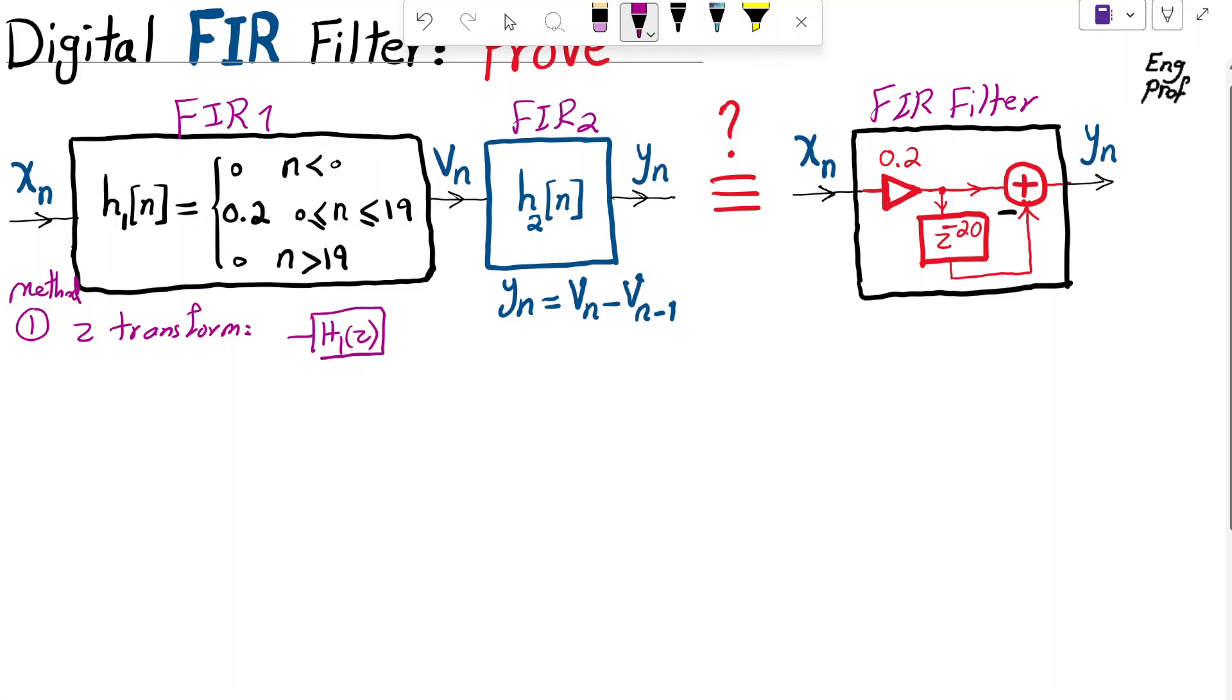we have H1 of Z, which is the Z-transform of the first system and H2 of Z, the Z-transform of the second system in cascade. Then we know the overall system, if we put the whole thing as one black box, has a Z-transform or transfer function that is basically the product of the two involved systems, H1 and H2.